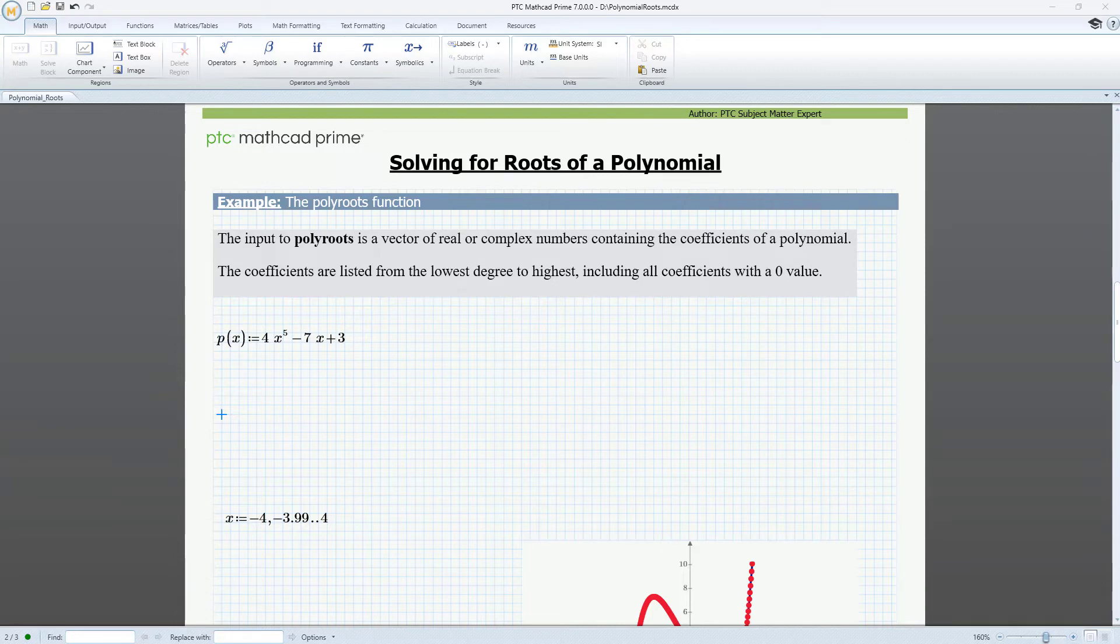The input to polyroots is a vector of real or complex numbers containing the coefficients of the polynomial. The coefficients are listed from the lowest degree to the highest, including all coefficients with a zero value.